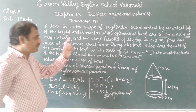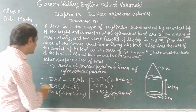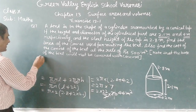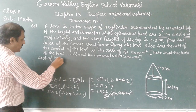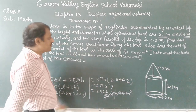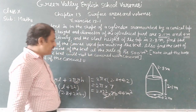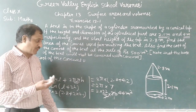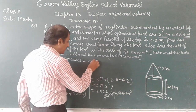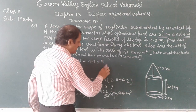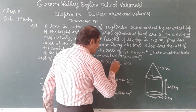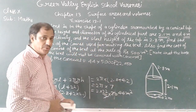Now we are going to find the cost of the canvas. The cost of 1 meter square is rupees 500, and the total surface area of the canvas is 44 meter square. So the total cost of the canvas is equal to 44 multiplied by 500, which equals rupees 22,000. This is the total cost of the canvas.